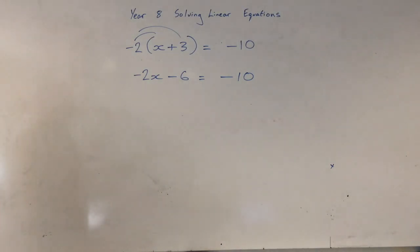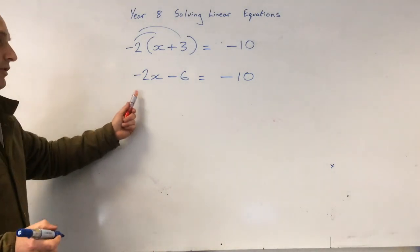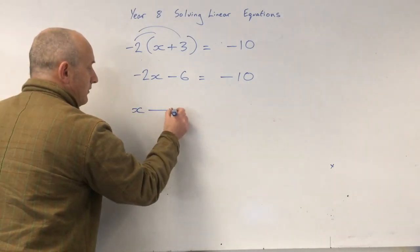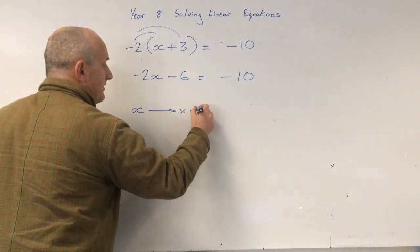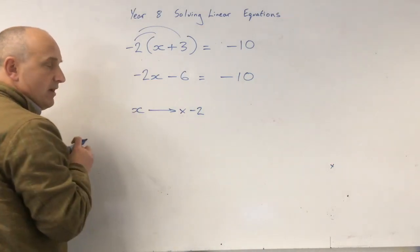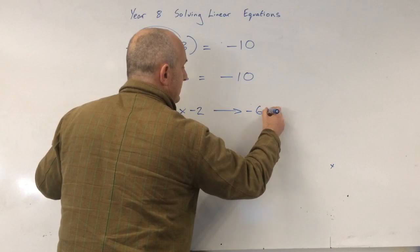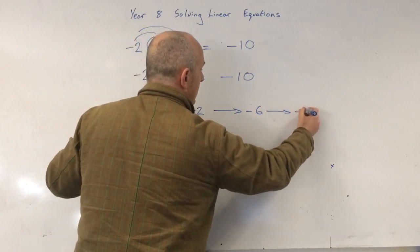Okay. So now let's do this. So we've got x. We multiply by negative 2. Can you see we multiply by negative 2. We minus 6. And the answer is minus 10.